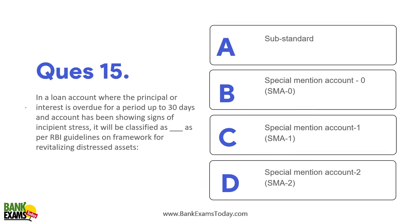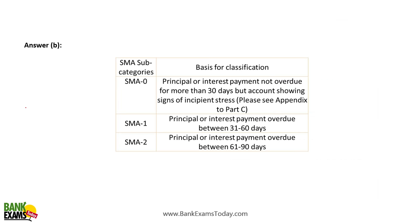For bigger loans, RBI says that even if the first installment is defaulted, the account should become an SMA (Special Mention Account) — SMA-0. After the second installment is defaulted, it becomes SMA-1, then SMA-2, and finally NPA. In a loan account where principal or interest is overdue for a period up to 30 days, it is classified as SMA-0.